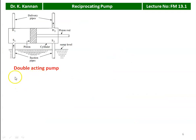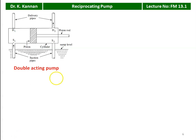In the double acting reciprocating pump, we have a piston reciprocating inside the cylinder with two suction valves (S1, S2) and two delivery valves (D1, D2) — one on each side of the piston. In the single acting pump, for every one revolution of the crankshaft there is one delivery. But in the double acting pump, for every revolution there will be two deliveries — delivery valve 1 delivers water and delivery valve 2 also delivers water, resulting in continuous delivery.